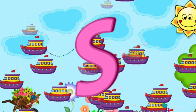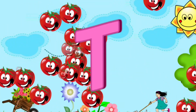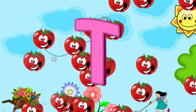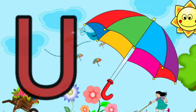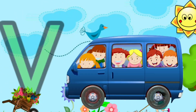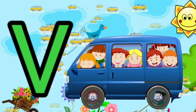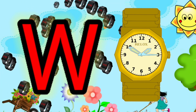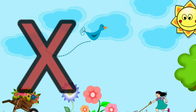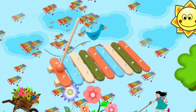U is for umbrella, u-u-umbrella. V is for van, v-v-van. W is for watch, w-w-watch. X is for xylophone, x-x-xylophone.